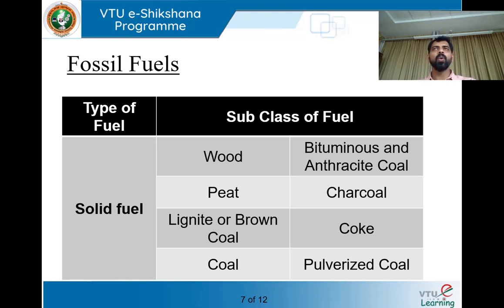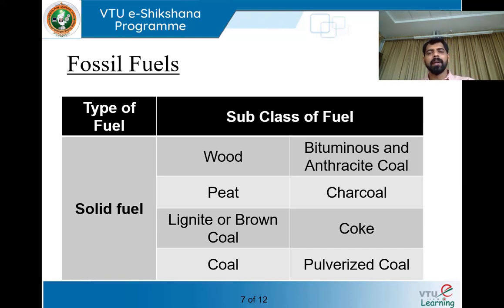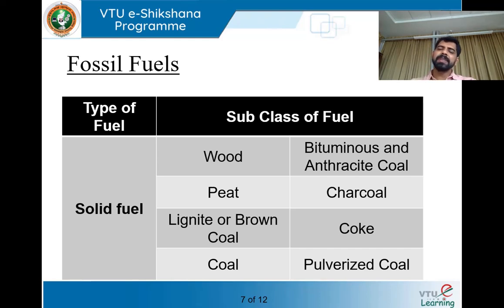That is how coals are formed — from all the dead plants, big trees and branches. Once we dump them across the coastline, they mix with organic-rich mud and undergo a chemical reaction process. That is how coal is formed.